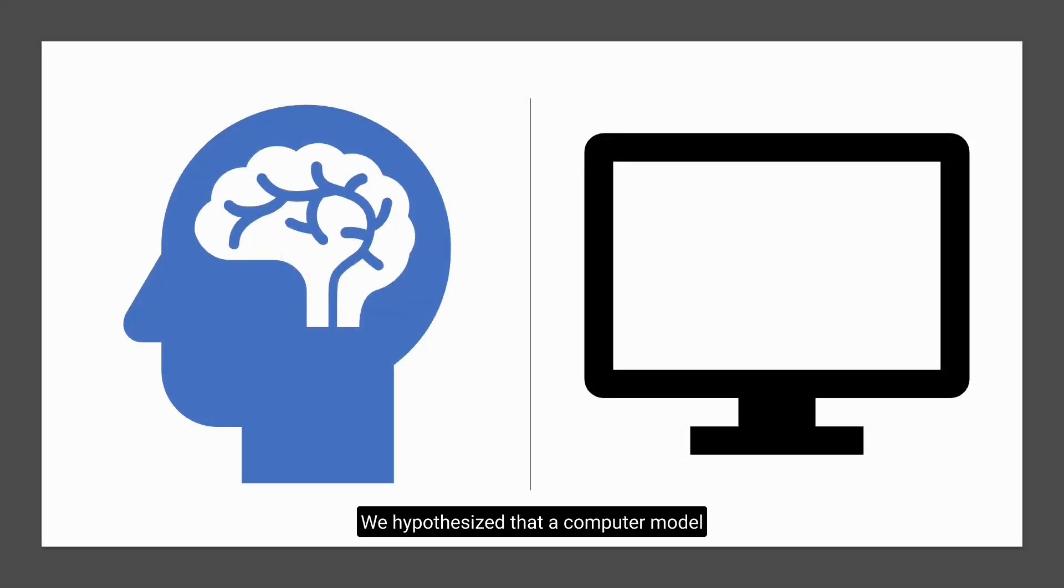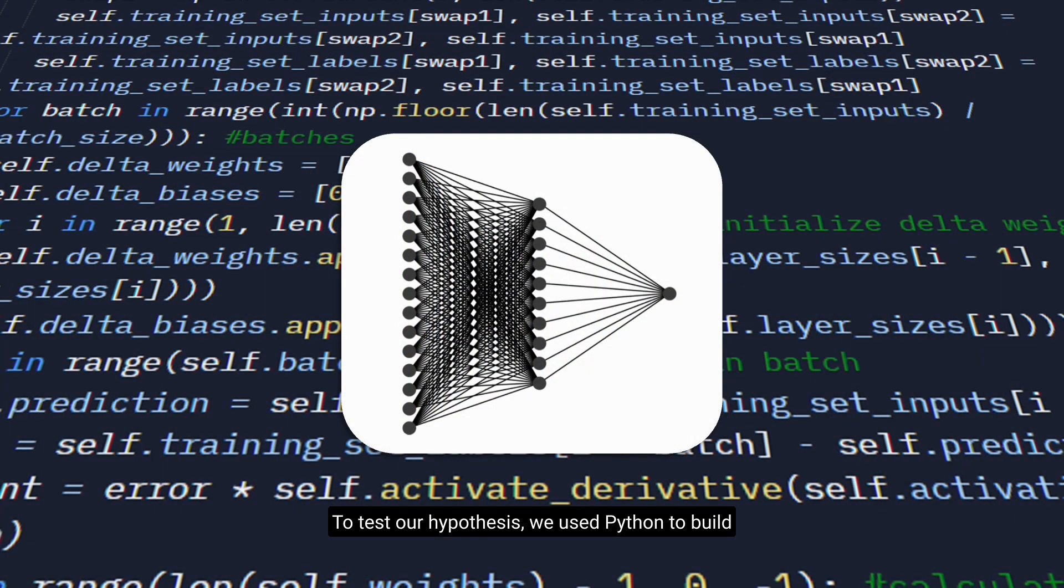We hypothesized that a computer model would make the same prediction. To test our hypothesis, we used Python to build a neural network trained on the data shown earlier.